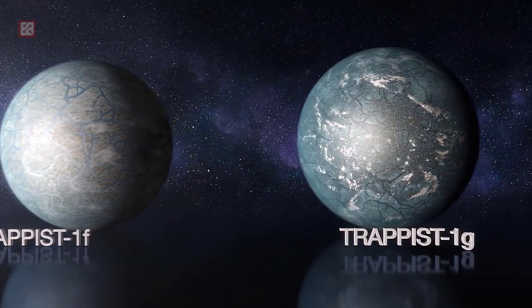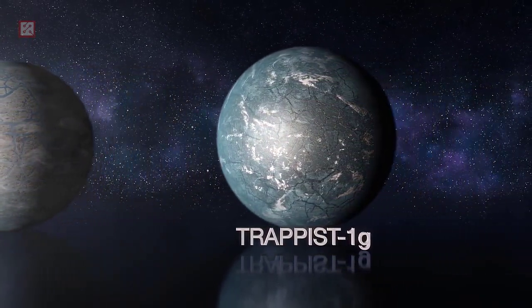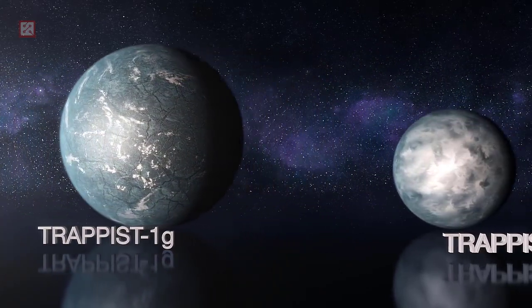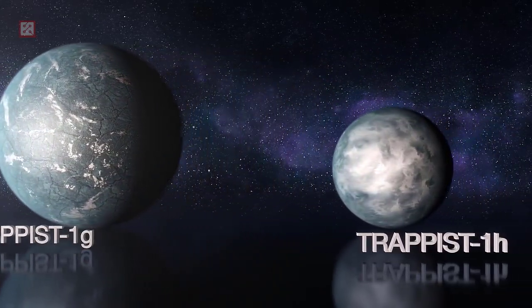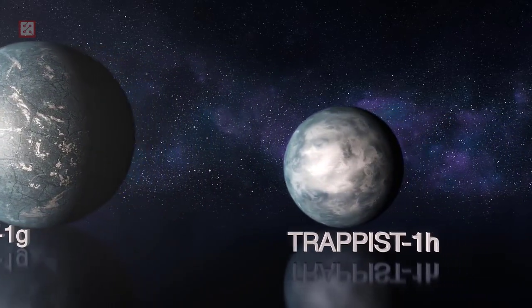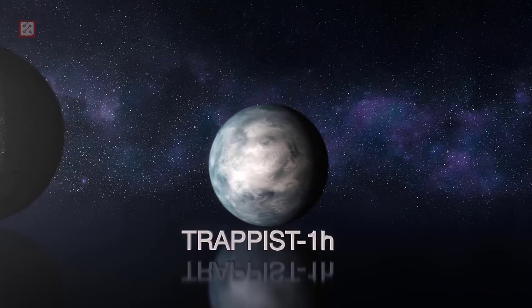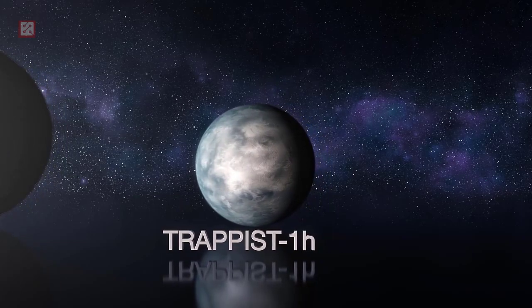More detailed studies of TRAPPIST-1E and the other TRAPPIST-1 planets released in 2018 determined that the planet is one of the most Earth-sized worlds found, with 91% of the radius, 77% of the mass, 102.4% of the density, and 93% of the surface gravity.